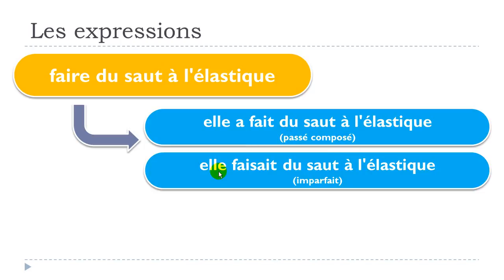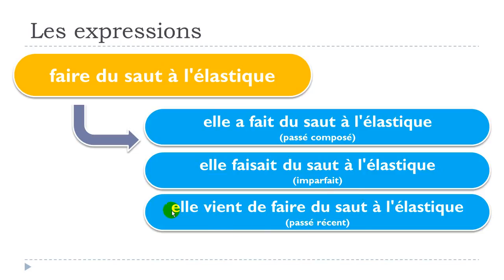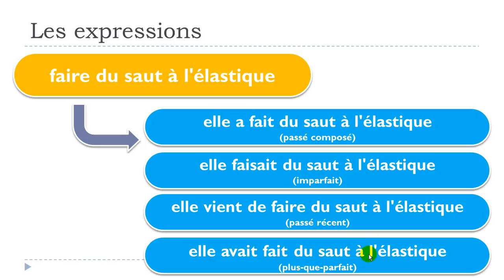Elle faisait du saut à l'élastique is imparfait. Elle vient de faire du saut à l'élastique is passé récent. Elle avait fait du saut à l'élastique is plus que parfait. One more time: elle a fait — passé composé; elle faisait — imparfait; elle vient de faire — passé récent; elle avait fait — plus que parfait.